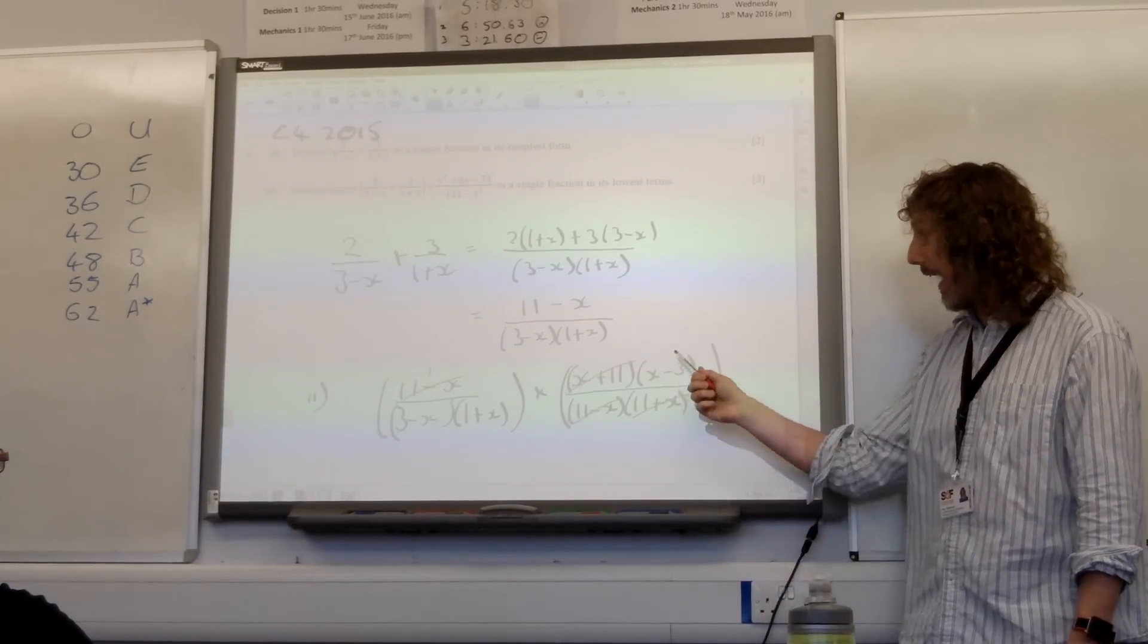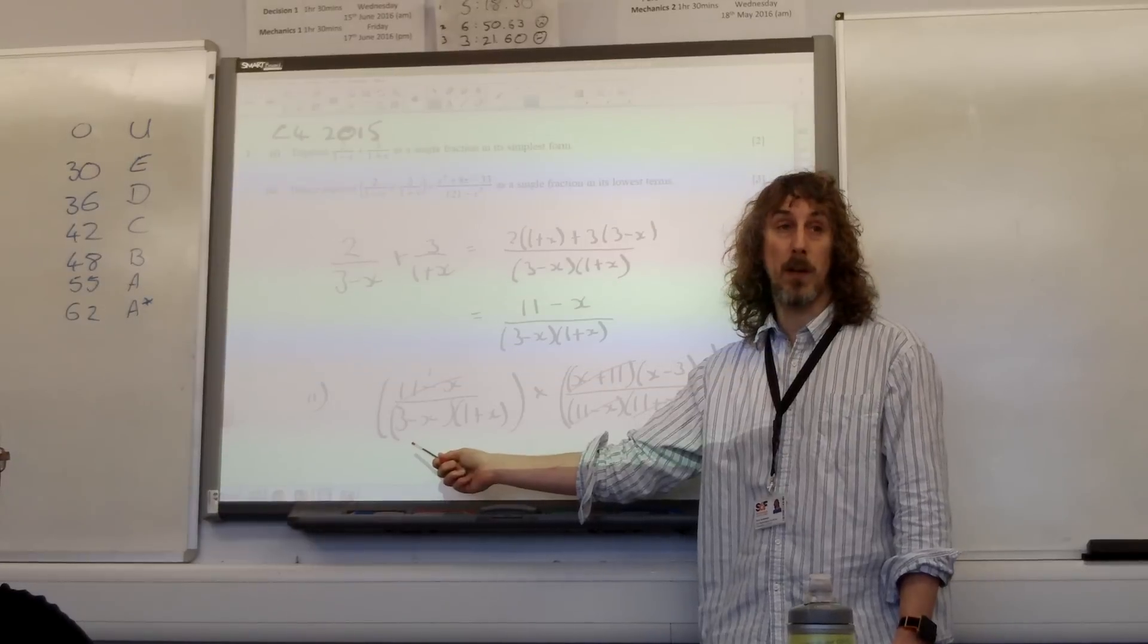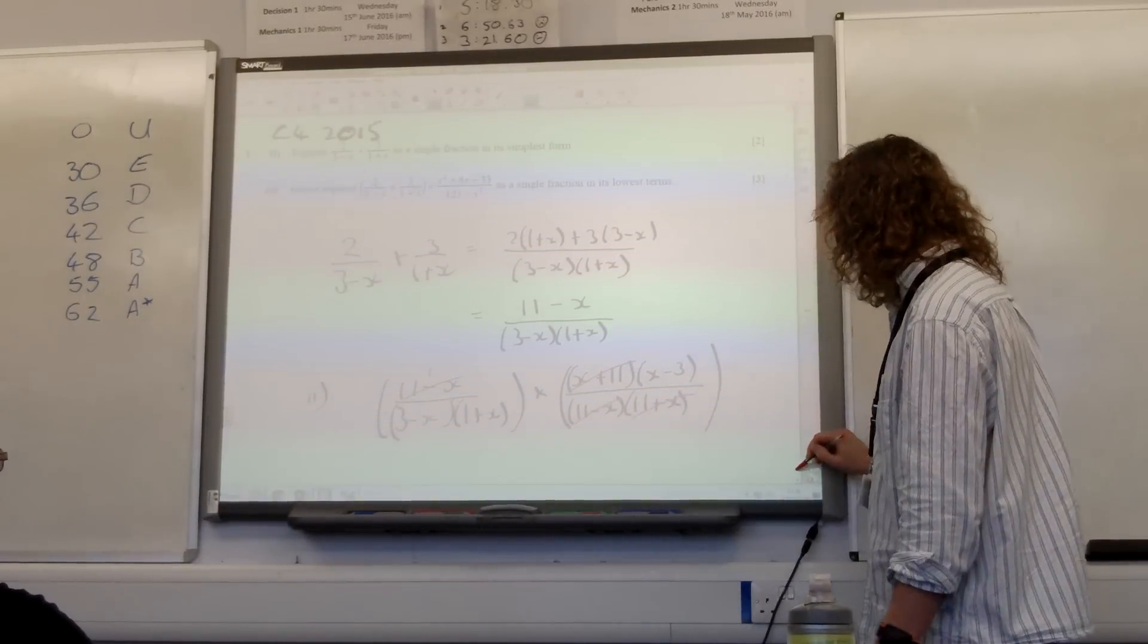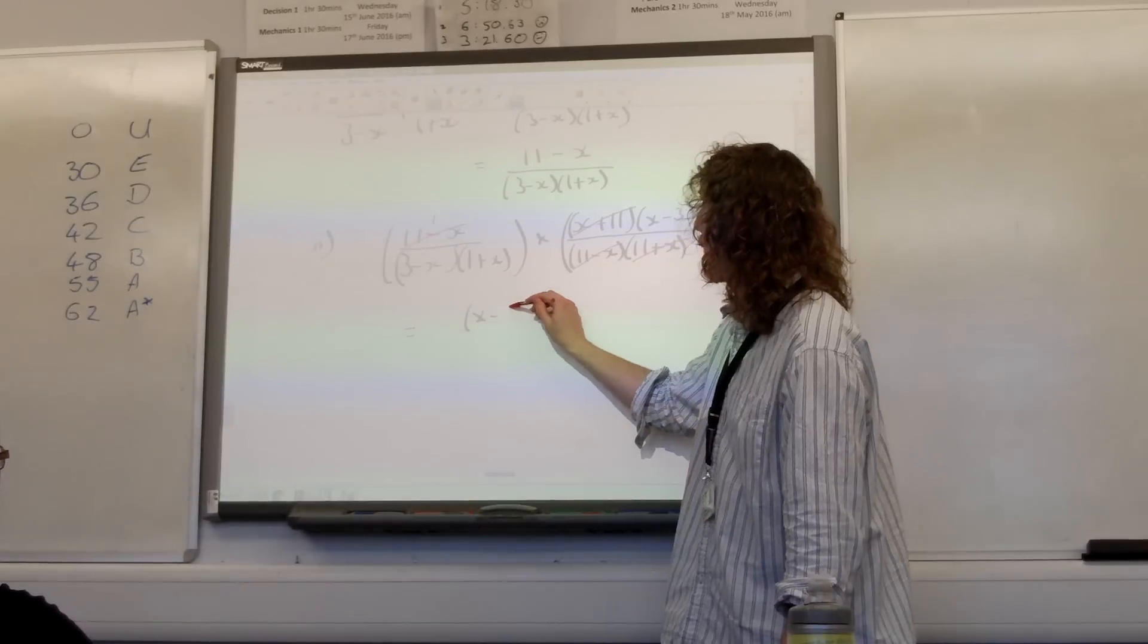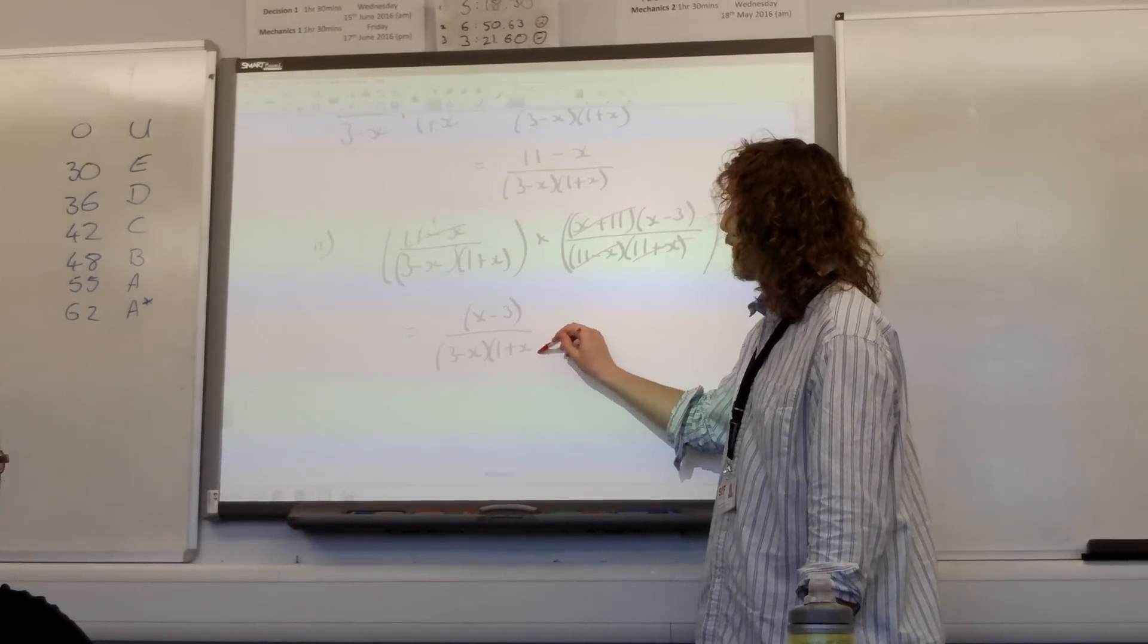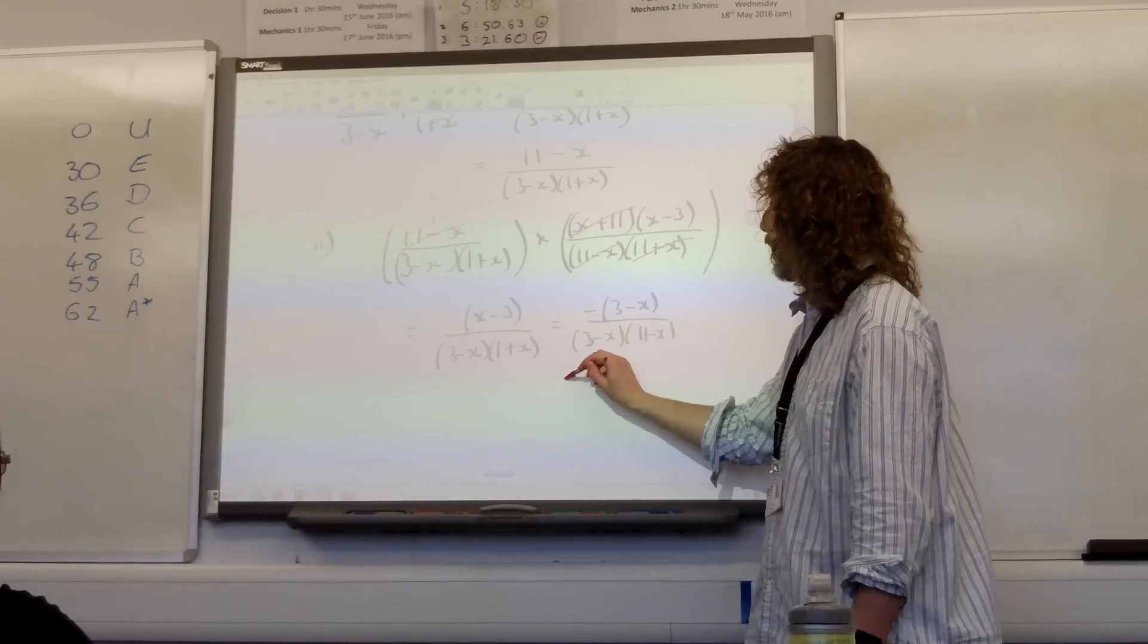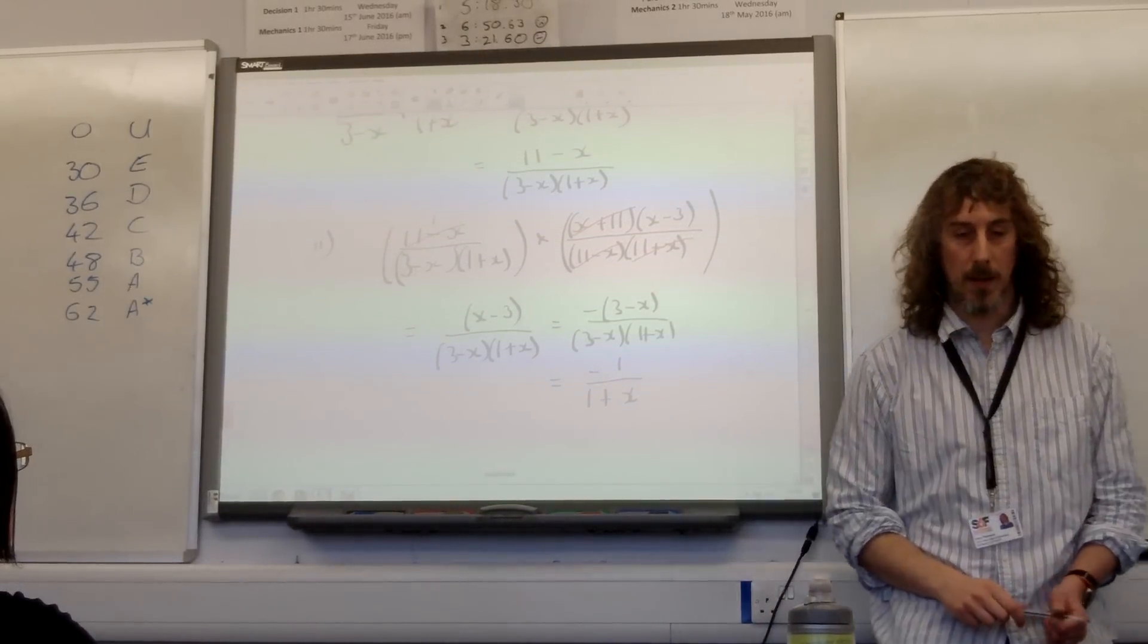We've also got x minus 3 and 3 minus x. They are close to being the same thing. x minus 3 is what you get if you multiply 3 minus x by minus 1. So by canceling out those two, you may want to do a middle step where you've got x minus 3 over 3 minus x, 1 plus x, 1 plus x. And then notice that it's minus 3 minus x over 3 minus x times 1 plus x. We don't need to show all of that working out. But minus 1 over 1 plus x is what we should be getting in our final answer.